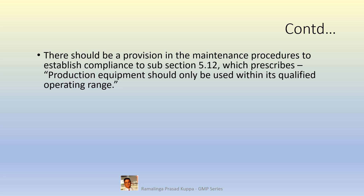There should be a provision in the maintenance procedures to establish compliance to Subsection 5.12, which prescribes production equipment should only be used within its qualified operating range. Obviously, equipment should be used within the qualified operating range. You cannot drive a vehicle at 150 km/h when it is designed to drive within 100 km/h — if you try to do so, it may fail and stops your journey there itself.